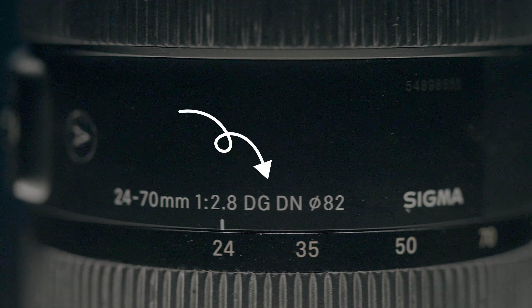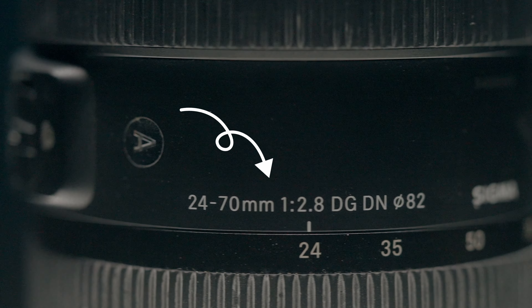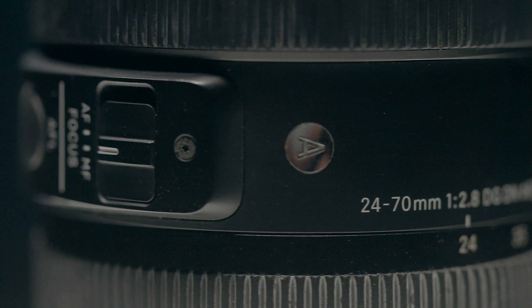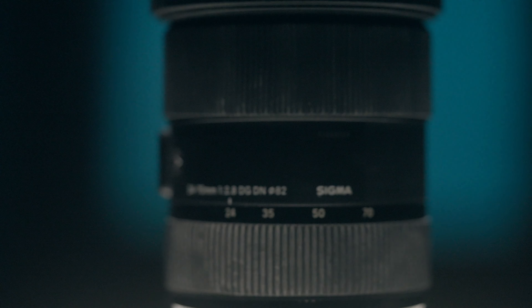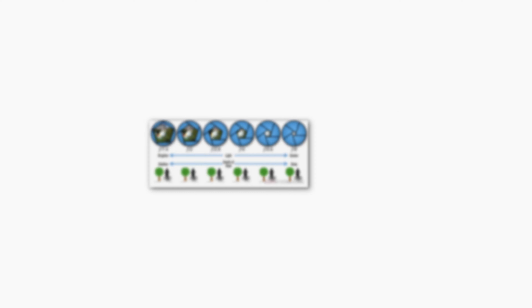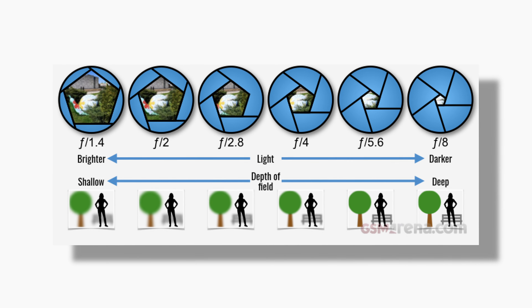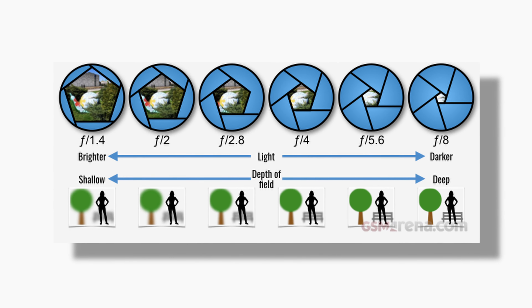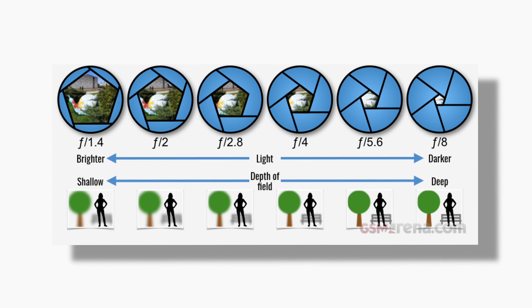If you look at this lens, you can see the lens with f2.8. This is not the same. There are f2, f1.8, f1.4 — there are many different backgrounds.